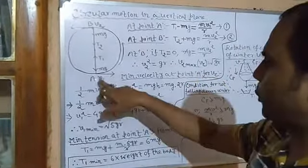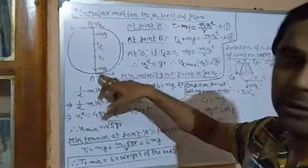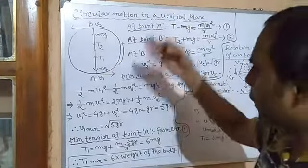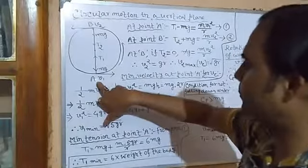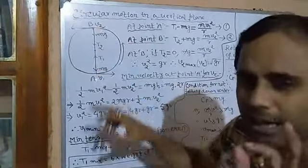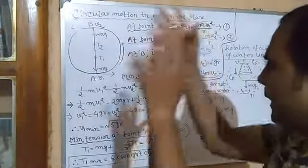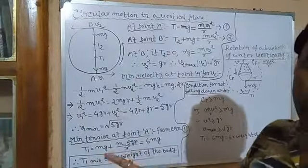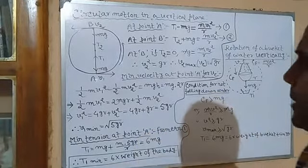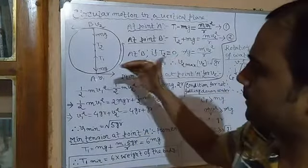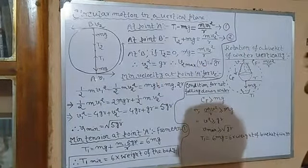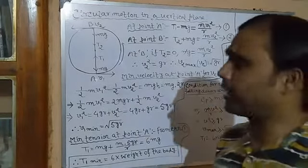At the bottom, velocity is maximum; at the top, velocity decreases. So the tension of the string will not be the same — here it will be tighter, here it will be slightly loose. The speed of the object will not be uniform, so we cannot call this uniform circular motion. Centripetal force acts radially inward along the center, weight acts downward, and centrifugal force acts radially outward.